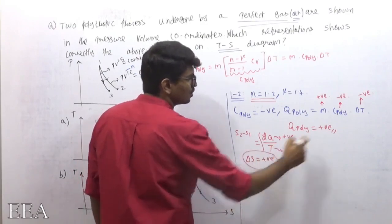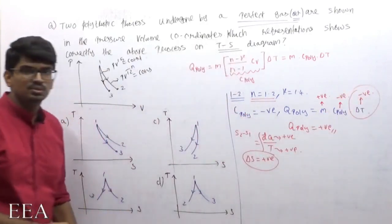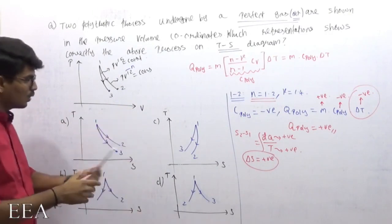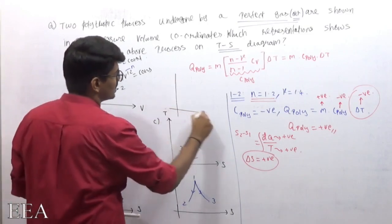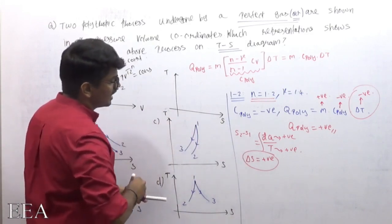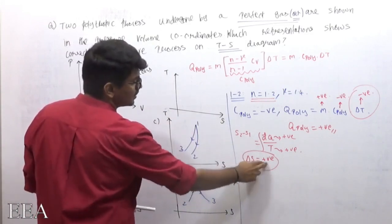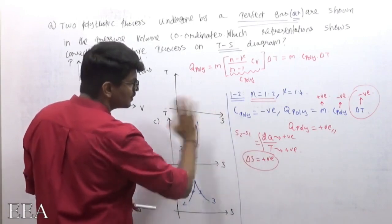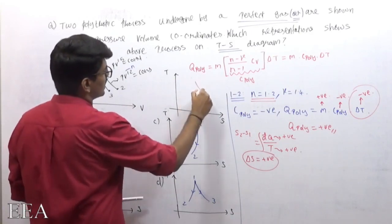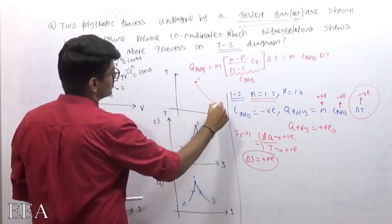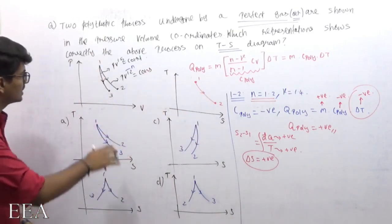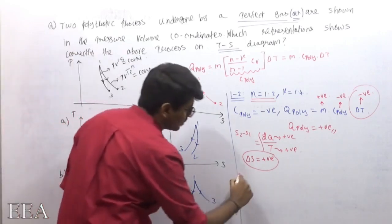Entropy change ds = dQ / T. Since q_poly is positive and temperature is always positive, the change in entropy is positive. Temperature is decreasing (top to bottom) and entropy is increasing (left to right), so the 1→2 curve on the TS diagram slopes downward from left to right.